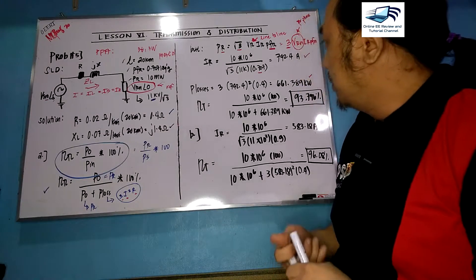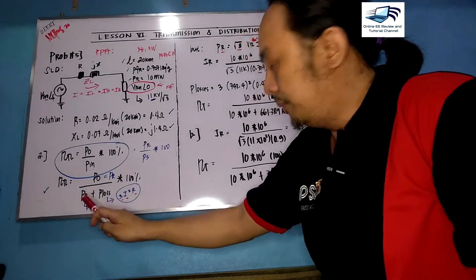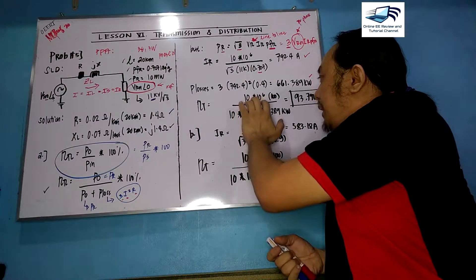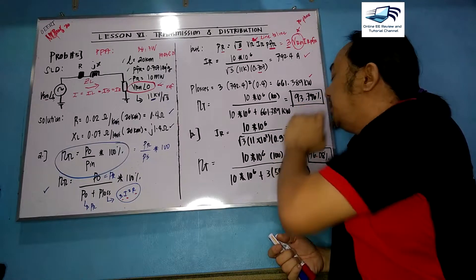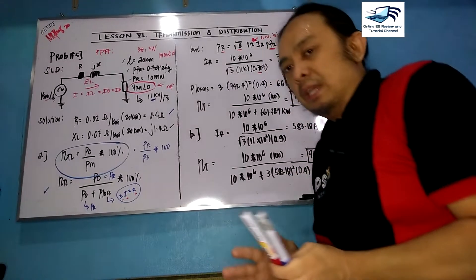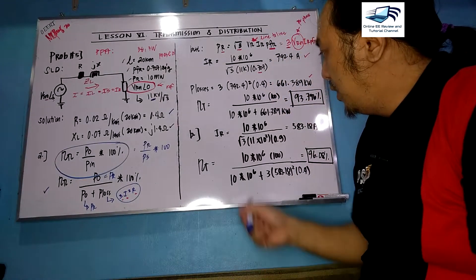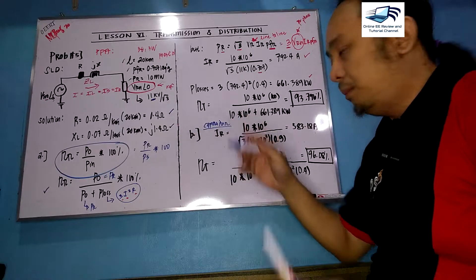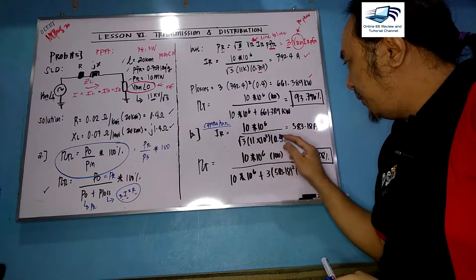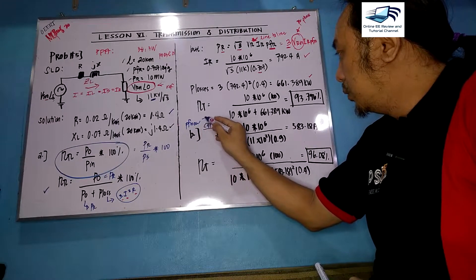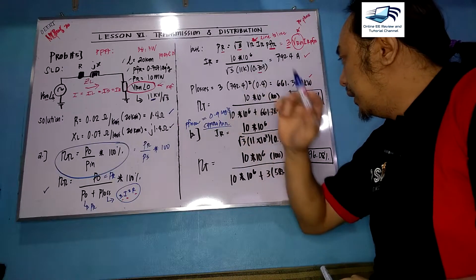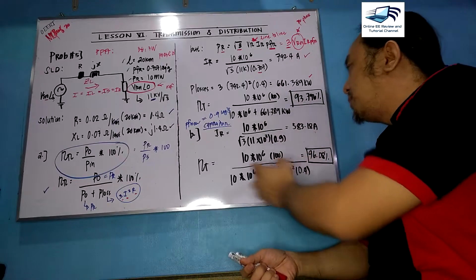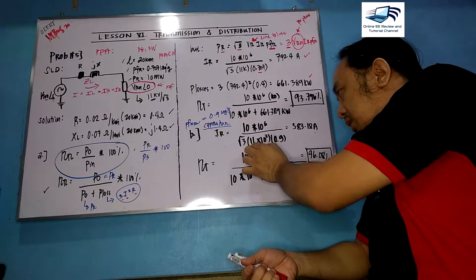Substituting all computed parameters into the efficiency equation: 10 megawatts over (10 megawatts plus 661.389 kW), multiplied by 100, the answer is 93.79 percent. Now the problem requires a second scenario: if a synchronous capacitor or condenser is added, raising the power factor to 0.9 lagging, what will happen to the efficiency? We apply the same approach with the same 10 megawatts and 11 kV receiving end voltage but with the new power factor.